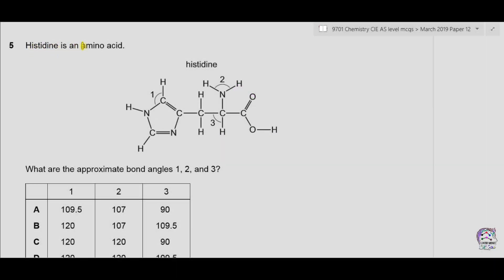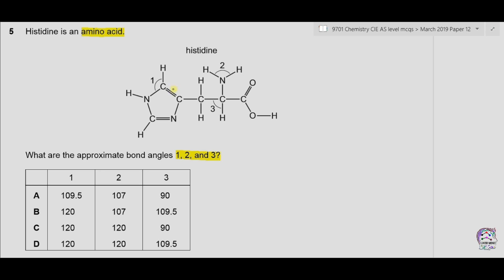Question number five: histidine is an amino acid. What are the approximate bond angles 1, 2, and 3 in its structure? According to VSEPR theory, a double bond behaves as a single covalent bond. For bond angle 1, the carbon has no lone pairs and is making four covalent bonds — treated as three regions of electron density — so the bond angle is 120 degrees. For bond angle 2, nitrogen is making three single covalent bonds with one lone pair, giving a trigonal pyramidal structure and a bond angle reduced from 120 to 107 degrees.